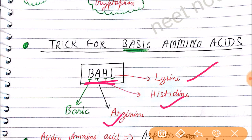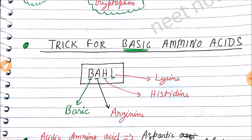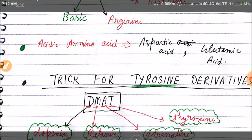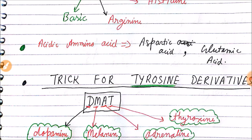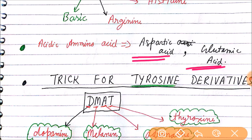For acidic amino acids, there is no need for any trick, because from the name alone you can relate — aspartic acid, glutamic acid — these are basically acids. So there is no need to memorize a special trick for those.